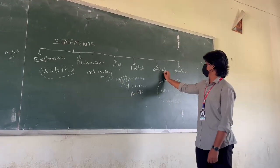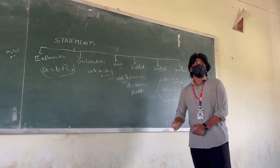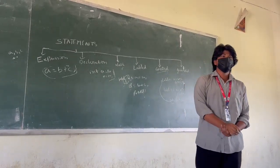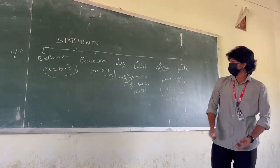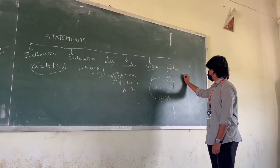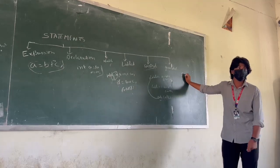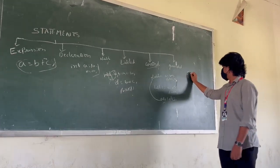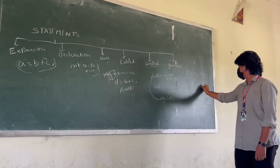Control statements are used to control the execution of the program like continue, break, etc. Guarded statements are used to write in brackets. Thank you.